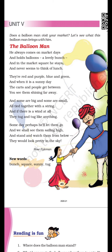प्यारे बच्चों, third stanza में कह रहे हैं कि कुछ balloons small हैं, कुछ balloons big हैं। और वो सारे balloons एक साथ एक string से — एक धागे से बंधे हुए हैं। और अगर किसी दिन हवा चलती है, तो ऐसा लगता है जैसे वो धागे से खुद को खींच रहे हैं और खुद को फ्री करके आसमान में उड़ना चाहते हैं।